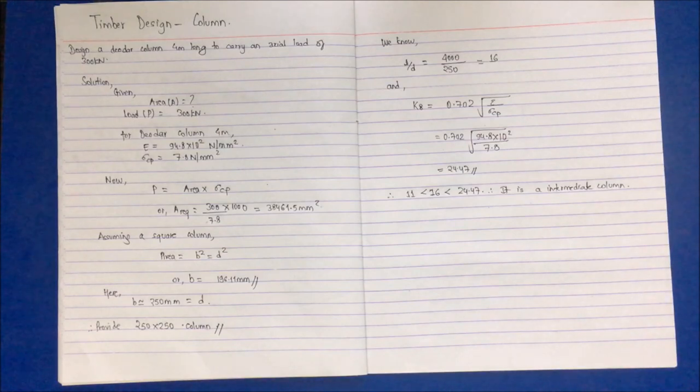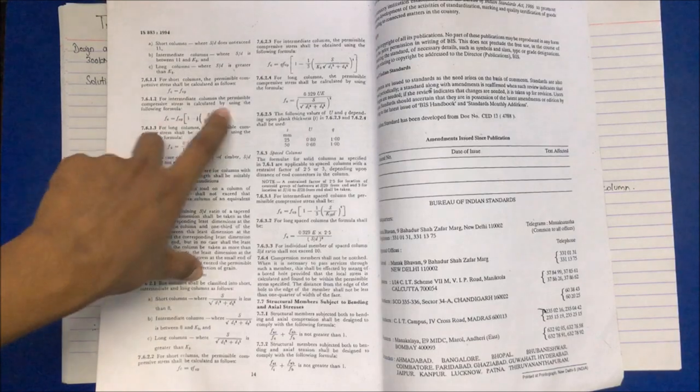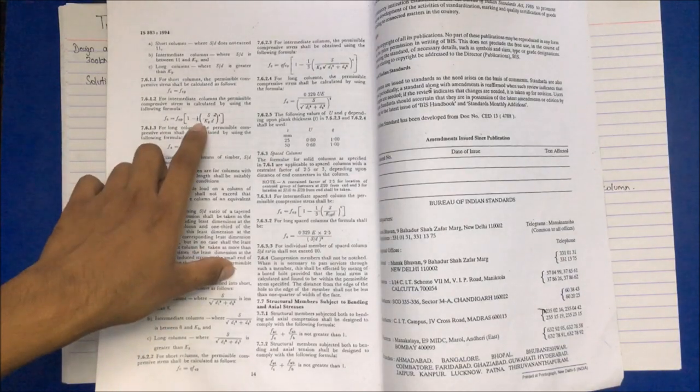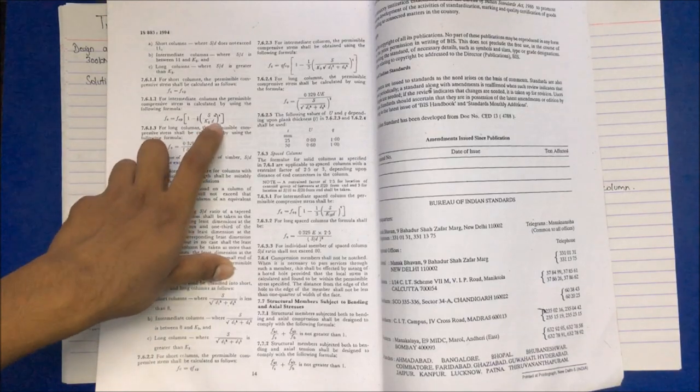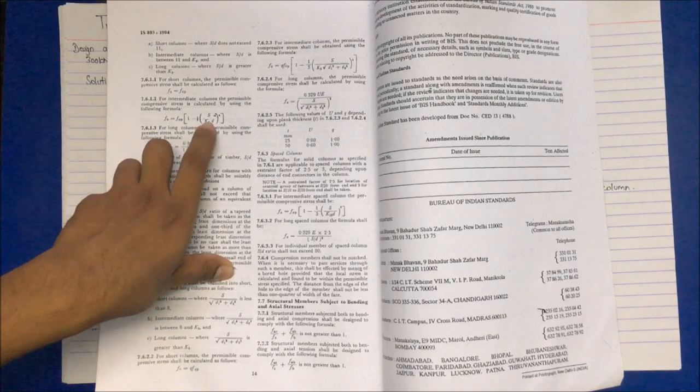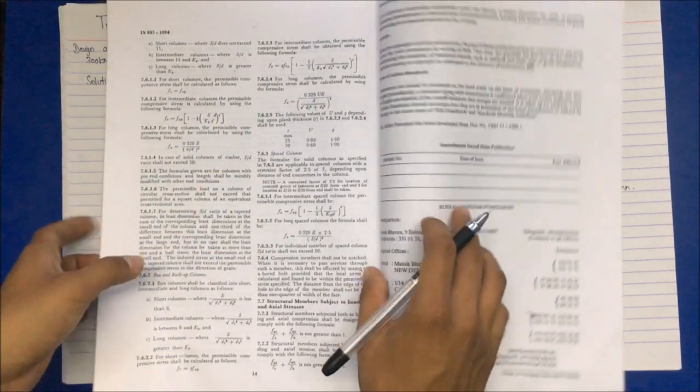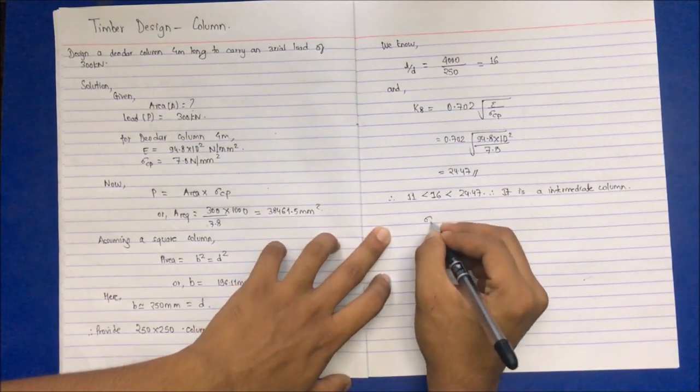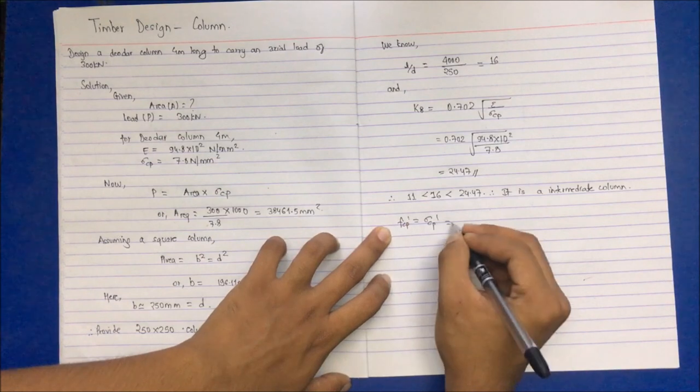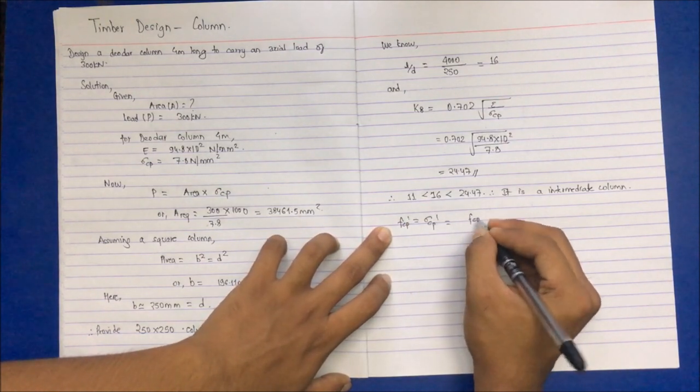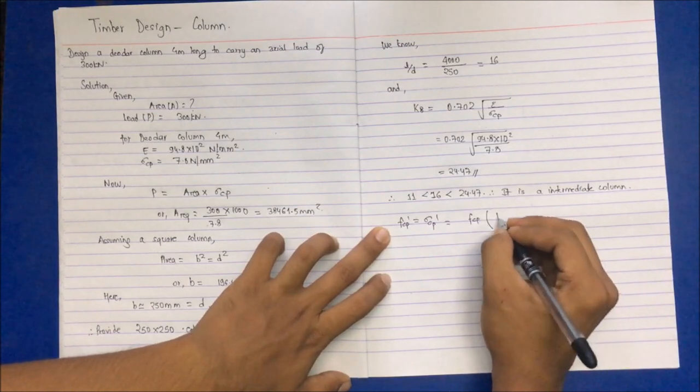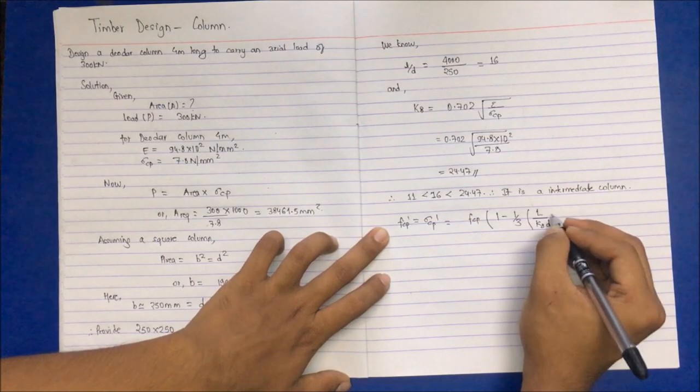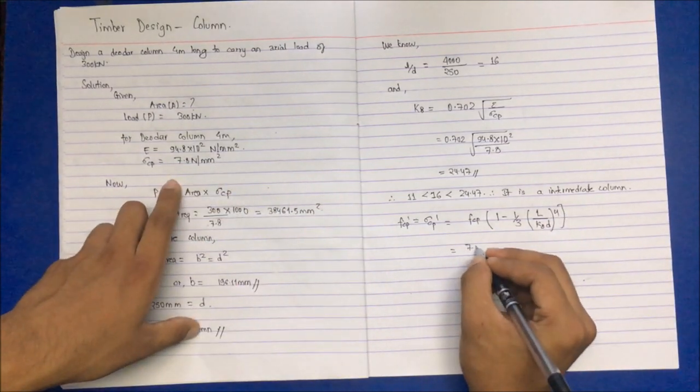If it is an intermediate column, looking in the code book, the permissible compressive stress is fc equals fcp times 1 minus 1 by 3 s divided by k8d to the power 4. We have just calculated the s by d term, which is L by D. Therefore, sigma cp dash equals sigma cp times 1 minus 1 by 3 L by k8d to the power 4. That is 7.8 times 1 minus 1 by 3 times 4000 by 24.47 times 250 to the power 4.